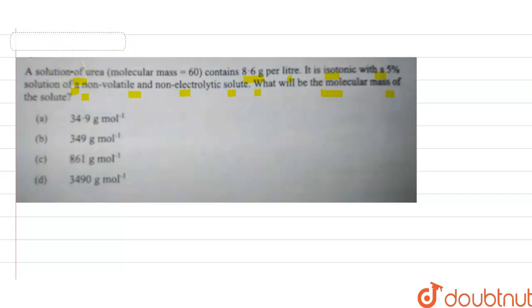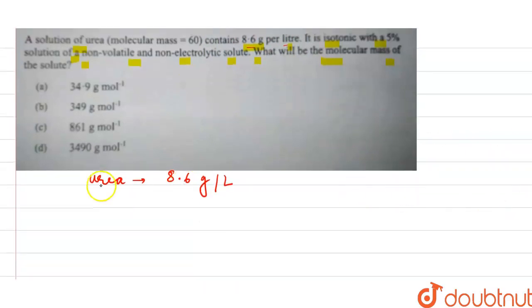We need to find the molar mass. It is given that the urea contains 8.6 gram per liter, so we can write urea equals 8.6 gram per liter. And as you know what is concentration...